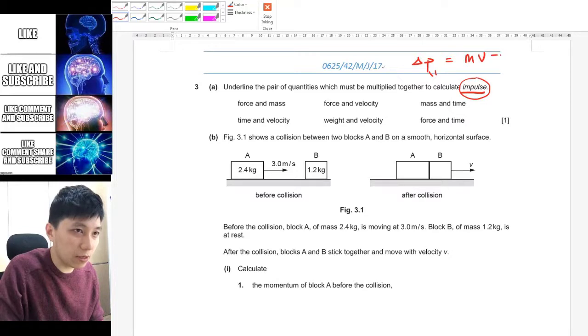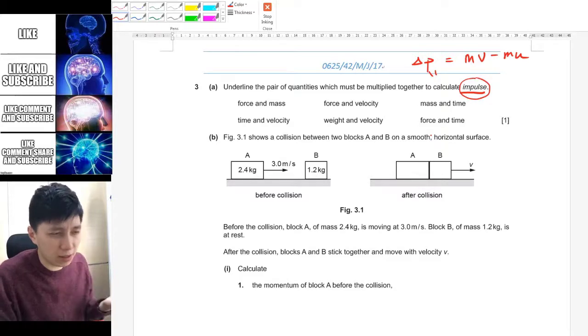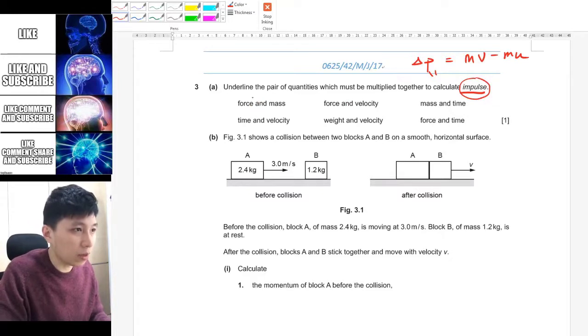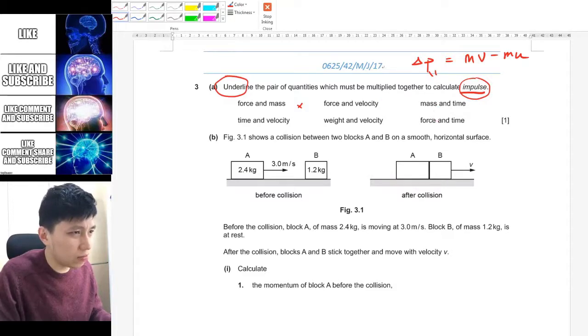Alright, so the first question is asking when the following two quantities multiply they will become impulse. So if you recall, impulse is something that we talked about that is the same as changing momentum delta P. So that is equal to mv minus mu. So if you just talk about momentum it should also be equivalent in terms of dimension. So force times mass is definitely wrong.